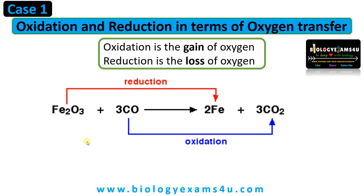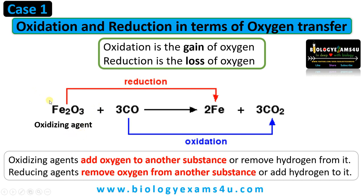Now let us see the oxidizing and reducing agent. Here iron oxide is the oxidizing agent. An oxidizing agent adds oxygen to another substance — iron oxide adds oxygen to carbon monoxide forming carbon dioxide. Whereas the reducing agent is carbon monoxide, which removes oxygen from iron oxide and forms carbon dioxide. So in terms of oxygen, an oxidizing agent donates oxygen to another substance.